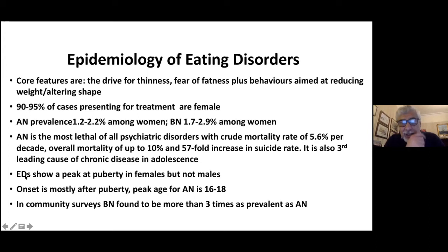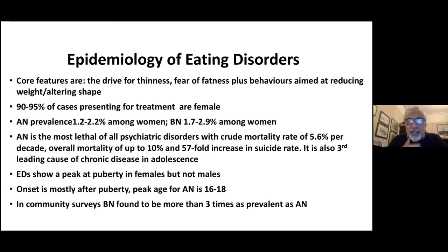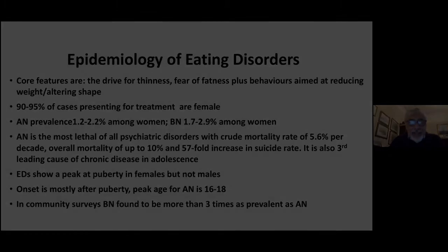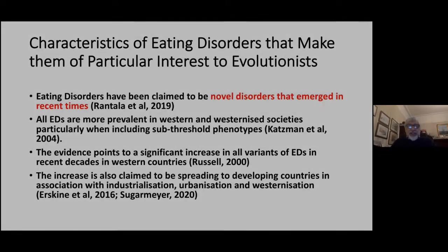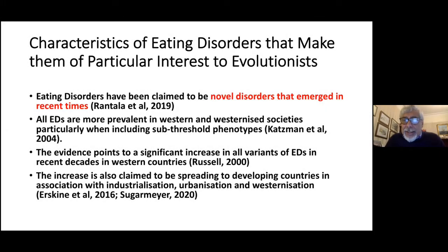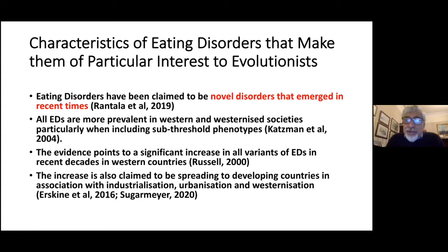Eating disorders show a peak at puberty in females but not males, and the peak age of onset for anorexia nervosa is between 16 and 18. So these are the characteristics of eating disorders that make them of particular interest to evolutionists.